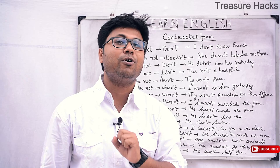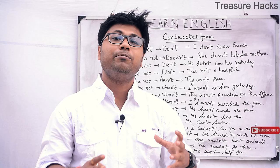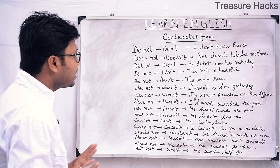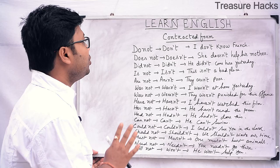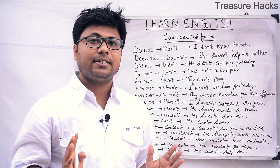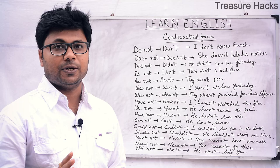So 'do not' in contracted form is 'don't'. The second one is 'does not' — 'does not' in contracted form is 'doesn't'. For example: She doesn't help her mother. Next, 'did not' in contracted form is 'didn't'. For example: He didn't come here yesterday.